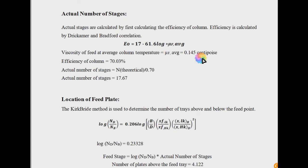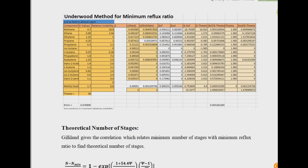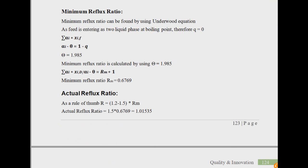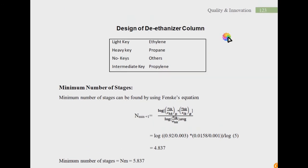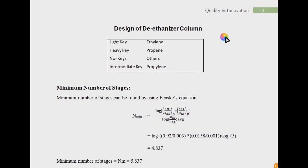This is the complete calculation of number of plates based on the shortcut method, for when you do not want to use the long tabulations of Lewis-Matheson. The shortcut method is far easier since the alpha values are fixed and only y and x change, though Lewis-Matheson can become tedious if you have not achieved your feed or distillate composition. You can use this shortcut method easily. Stay blessed, stay happy, and stay with us. Thank you.